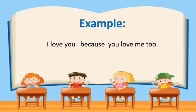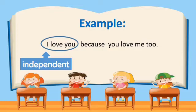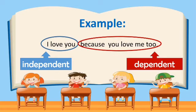Here is another example: I love you because you love me too. The independent clause is I love you. The subject is I and the predicate is love you — in other words, it has a complete thought. The dependent clause is because you love me too. It starts with the conjunction because.